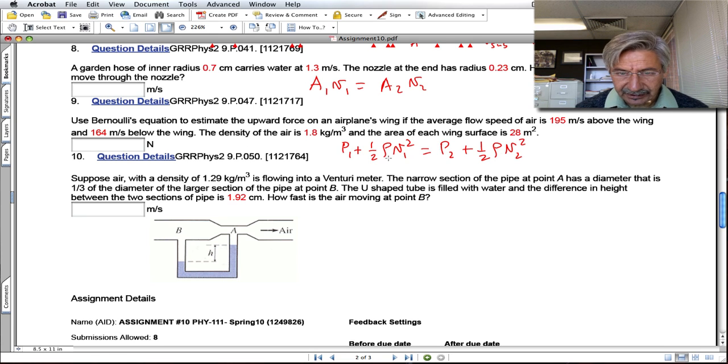If they give you the density of the air, you use the density of the air there. Then you calculate the pressure difference on the wing, which multiplied by the area is going to give you the force.